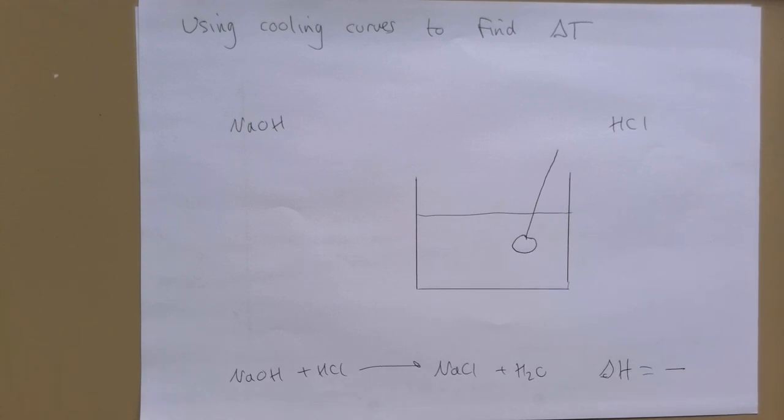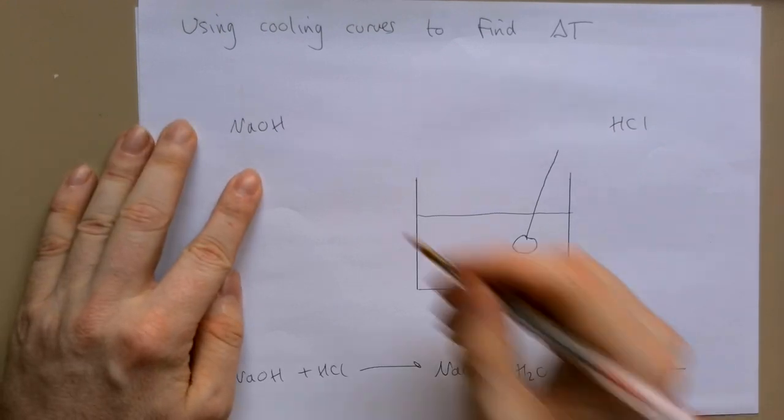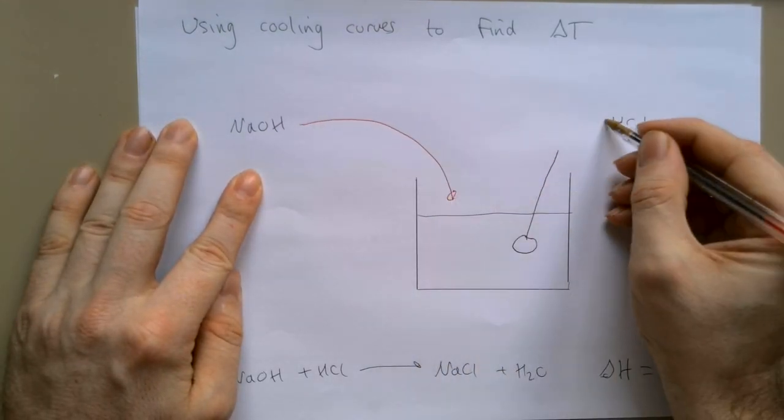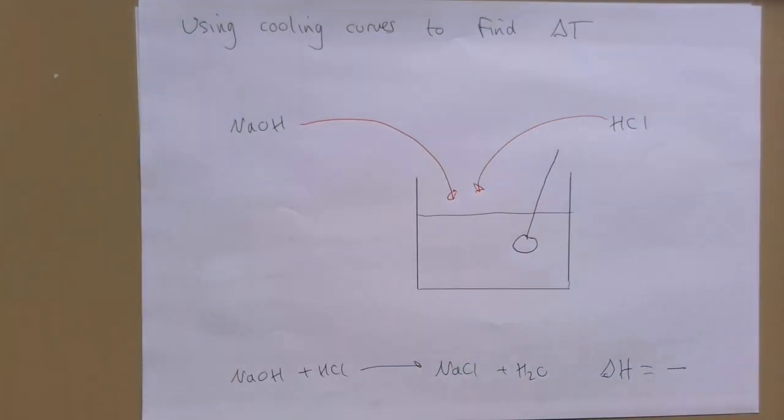First, let's set up a simple experiment. We have a beaker with a thermometer in and we're going to add some sodium hydroxide and some hydrochloric acid to our beaker. We are going to record the initial temperature before and then the final temperature after they've finished reacting.